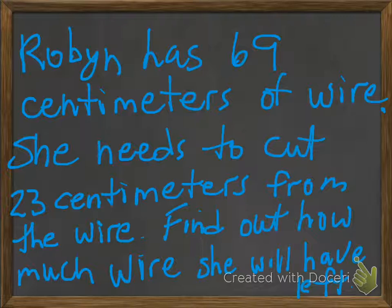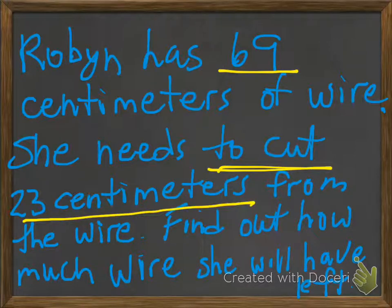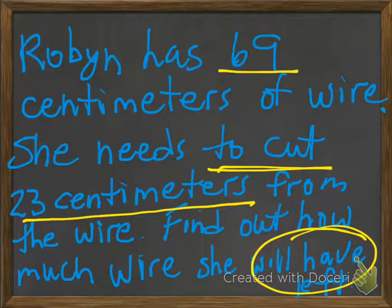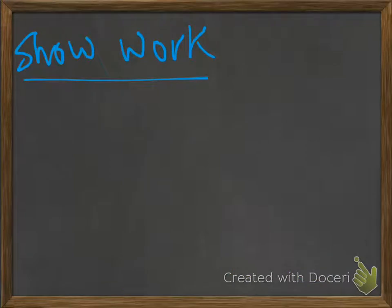All right. How did you do? Well, let's take a look at the problem again. Robin has 69 centimeters of wire. And she needs to cut 23 centimeters from the wire to find out how much wire she will have left. And we have two clues here: to cut and have left, which gives us clues we're going to subtract. So we have 69 and 23.